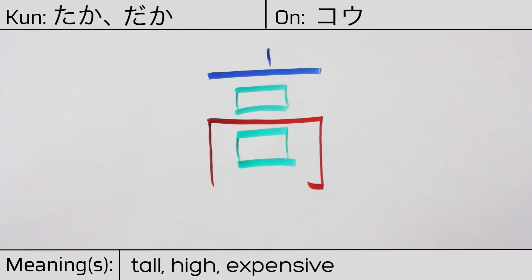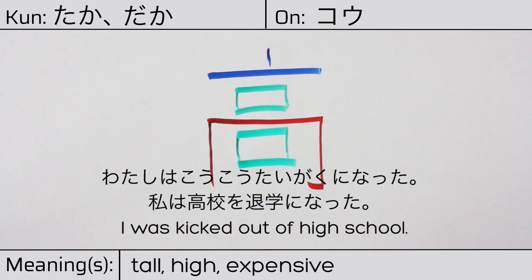Our example sentence is 私は高校を大学になった. I was kicked out of high school.